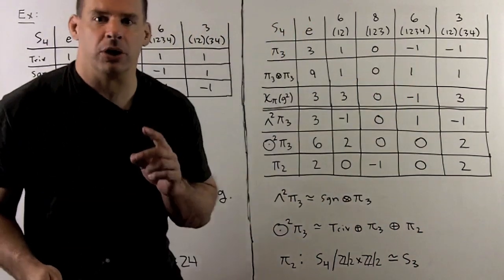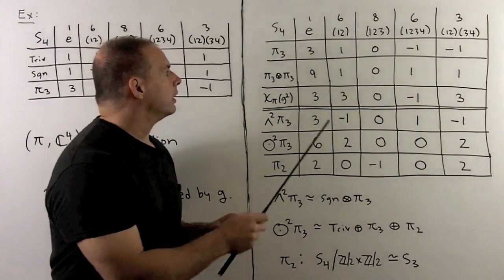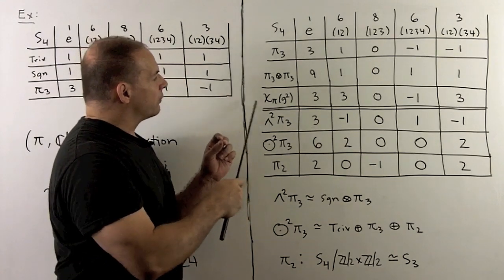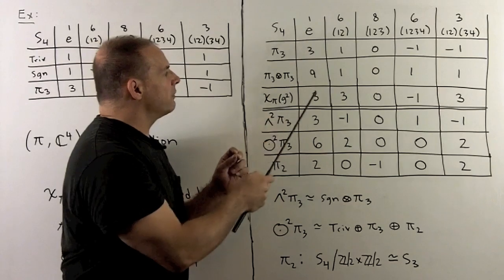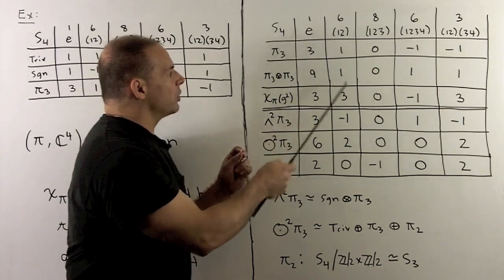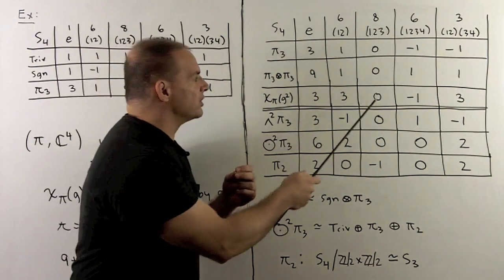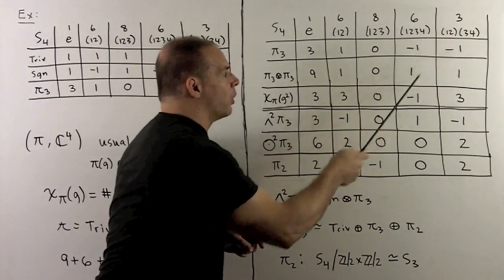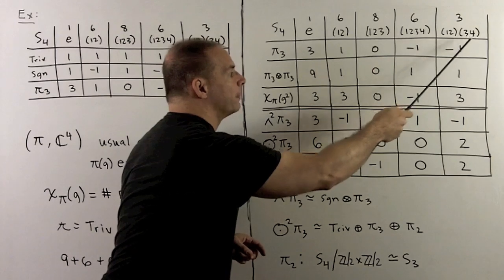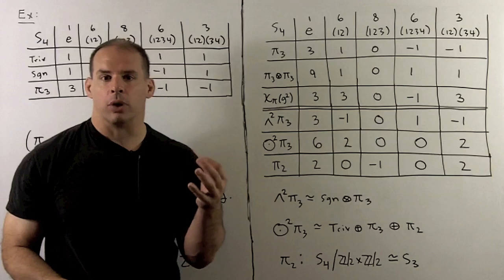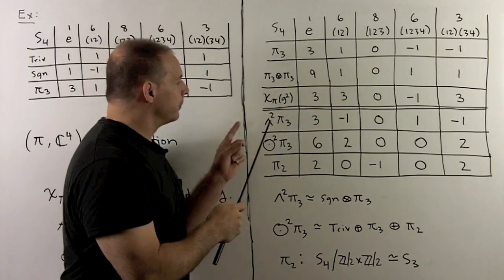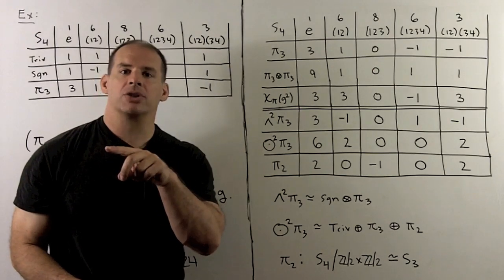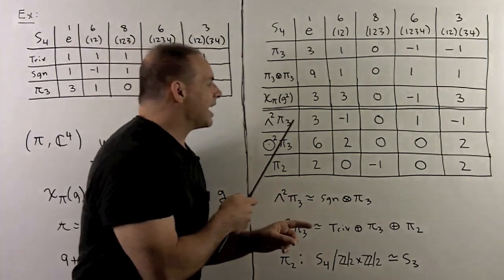Now we'll get the other representations by looking at alternating and symmetric two-tensors of pi_3. Taking the tensor of pi_3 with itself gives 9, 1, 0, 1, 1. We compute the character of pi_3 evaluated at each g squared: the identity squared gives 3; (1 2) squared is the identity, so we get 3; (1 2 3) squared is (1 3 2) which is in the same class, so we get 0; (1 2 3 4) squared gives (1 3)(2 4), giving minus 1; and (1 2)(3 4) squared gives the identity, so we get 3. Applying our formula — taking the difference and dividing by 2 — the alternating two-tensors give 3, minus 1, 0, 1, minus 1. The weighted sum of squares is 24, so it's irreducible. Note it's not in our original list, so that's a new one.